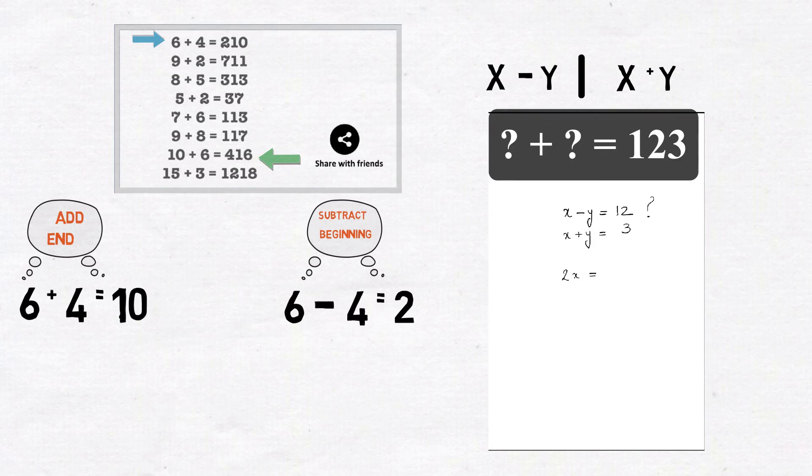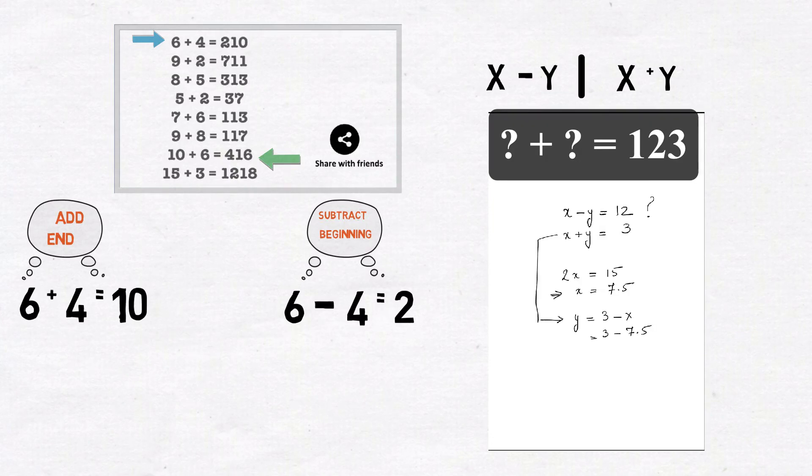So using this formula we get, x is equal to 7.5 and this means, y is equal to 4.5. But of course you may argue that this does not work since our problem only had integers. But that's the whole point guys, discussion is good.